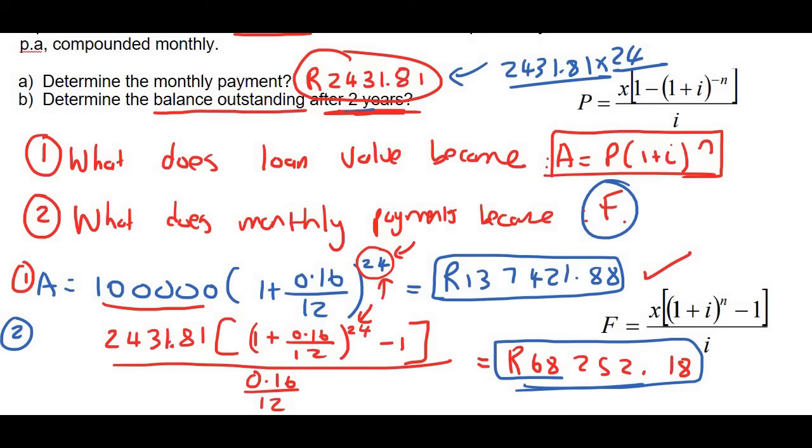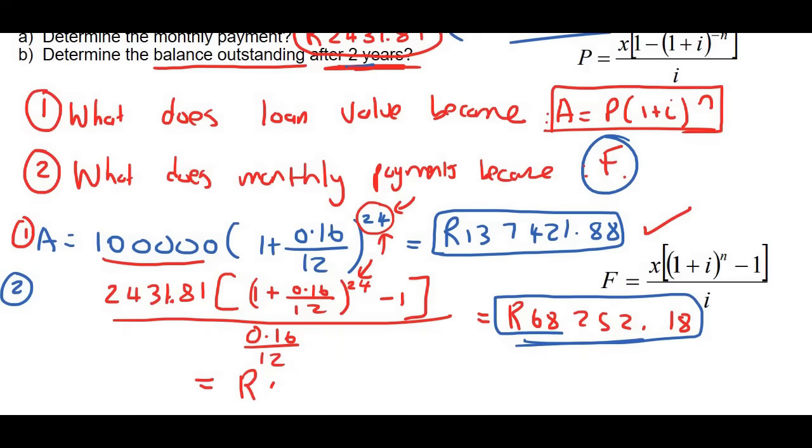Okay, so let's minus those two values. And that's going to give us 69,169 rand and 70 cents. If you also watched my present value video, we got a very similar answer, but the cents was 94 cents. Now that's just because of the two different methods, and it's also rounding off and things like that. So do not worry about that. You will be marked correctly. So now I hope that by watching this lesson, you understand how to do the future value method for balance outstanding.